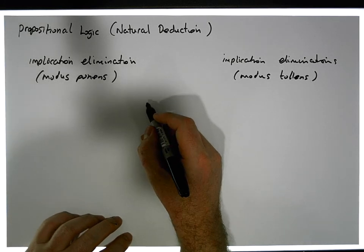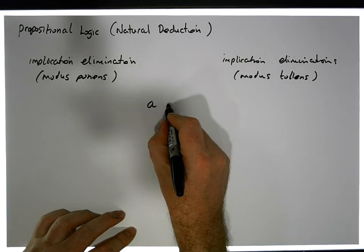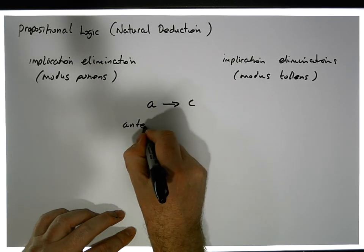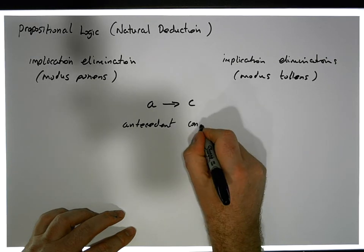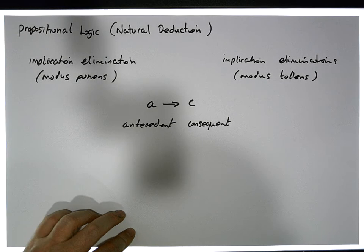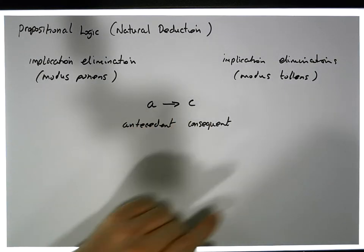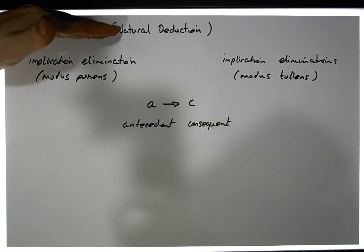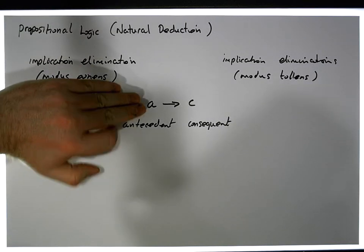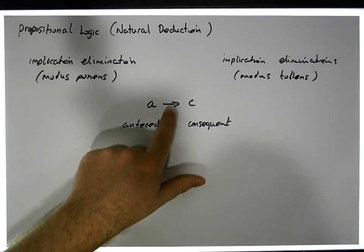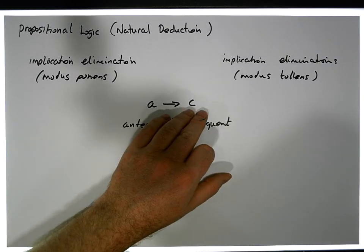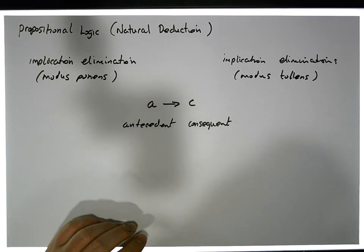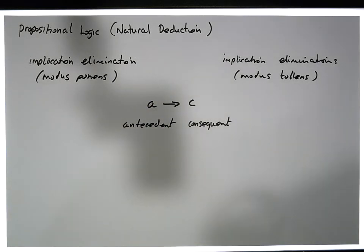Let's keep in mind that an implication is of the form A implies C, where A is known as the antecedent of the argument and C is known as the consequent. If A then C — that statement is either true or false. In our natural deductive system, we'll come across implications and at times we might want to eliminate them to separate out the antecedent and consequent and use them later in our proofs.